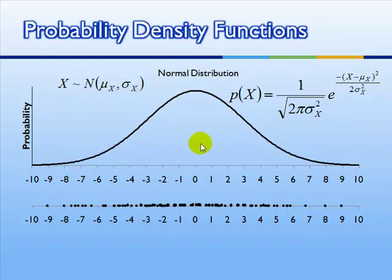This distribution could have been skinny like this, or it could have been even wider like that. And so this sigma, it represents how wide the distribution is.